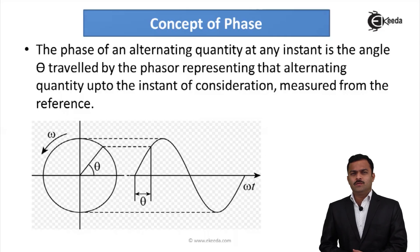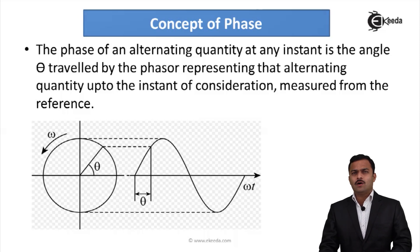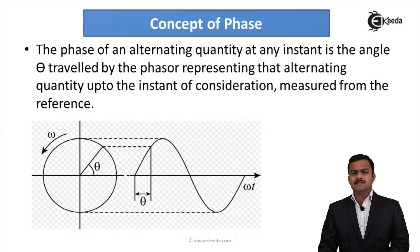In this video we are going to see one more important parameter of an AC waveform, and that is phase. The standard equation is given as e = Em sine(ωt + φ). We missed out this φ earlier, or we considered φ equal to 0, but if φ is not 0, then what? So φ is nothing but the phase of an AC quantity. The phase of an alternating quantity at any instant is the angle θ travelled by the phasor representing that alternating quantity up to the instant of consideration, measured from the reference.